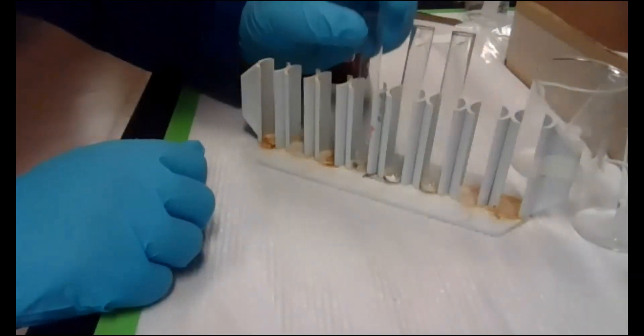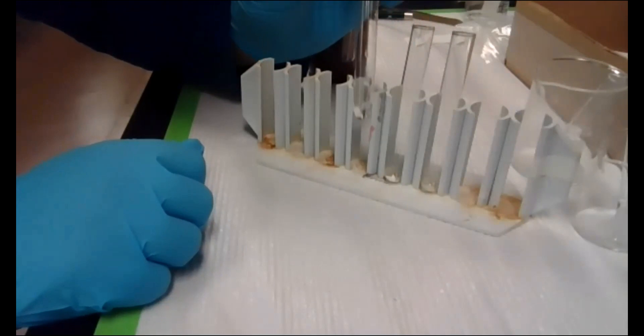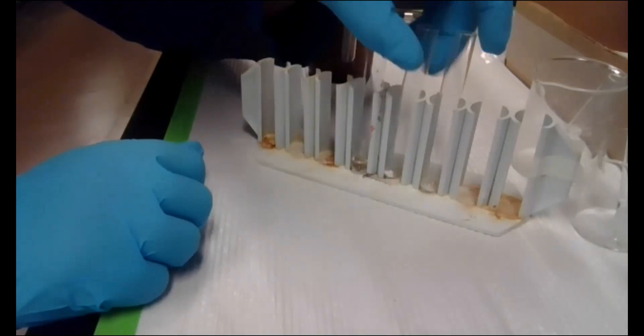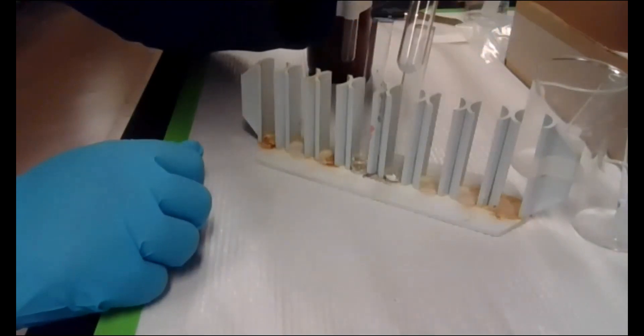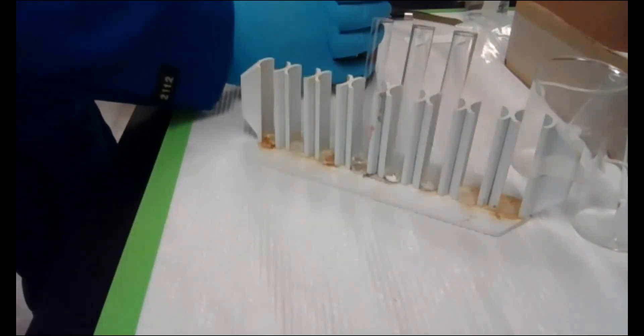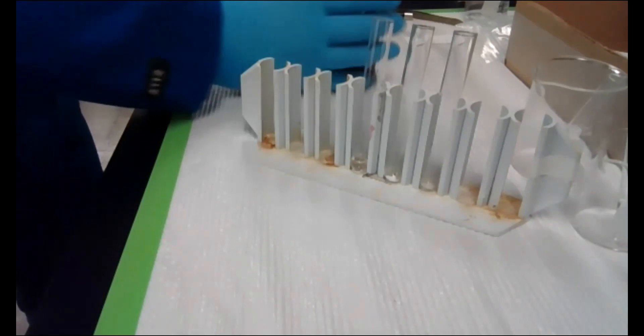So here in these test tubes, I just have water. Here I just have a pinch of the acetaminophen. And here a pinch of the phenacetin that we made. So for each one of these, I'm going to add one ml of our ferric chloride solution.